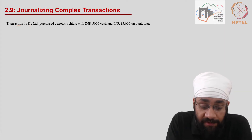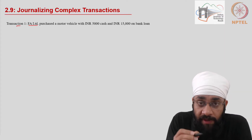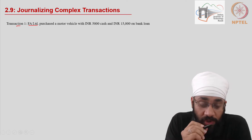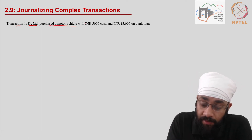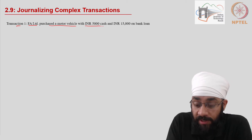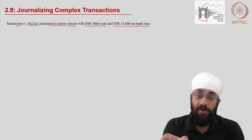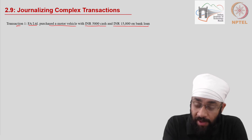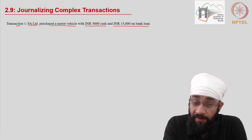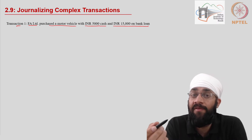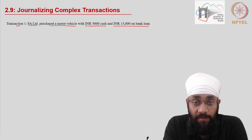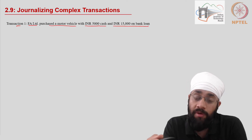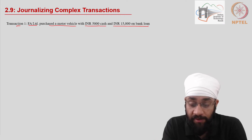The first transaction: FA Limited — Financial Accounting Limited, a new company — purchased a motor vehicle for 5,000 cash and 15,000 on bank loan. It is going to happen that you do a down payment for purchase of an asset, and then there is a loan taken from a financial institution. How do we write such journal entries?